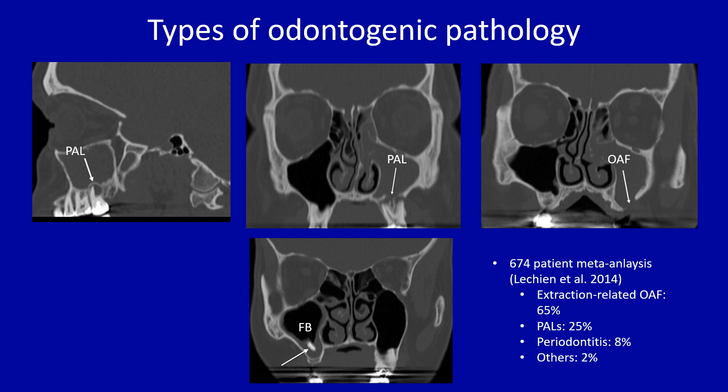A large meta-analysis in 2014 looked at 674 patients and found that extraction-related oroantral fistula was the most common cause at 65 percent, periapical lesions 25 percent, periodontitis 8 percent, and others like foreign bodies 2 percent.